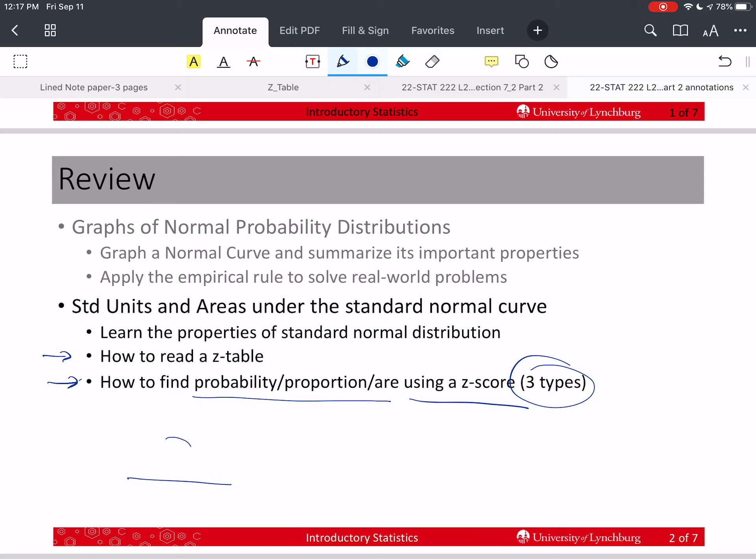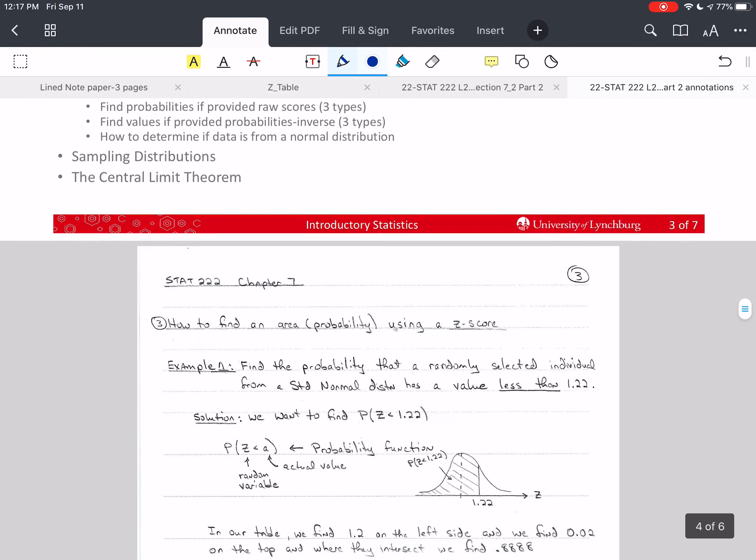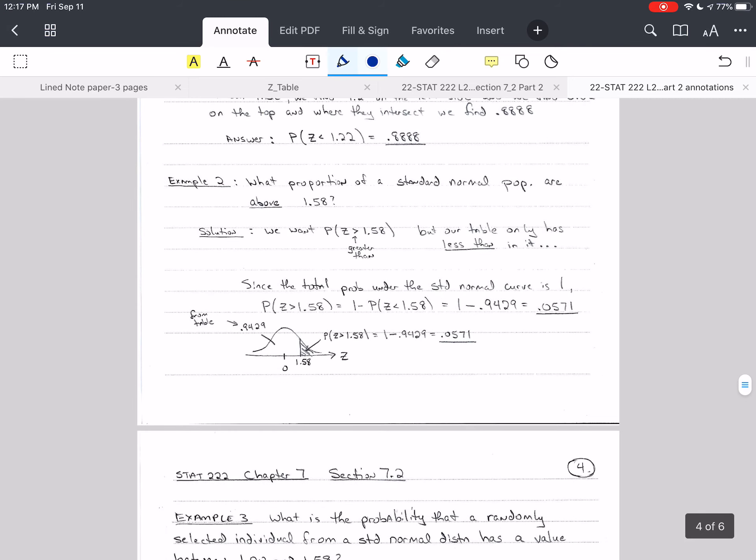which was where we're saying that there's some value, let's call it a, and we want to know what's the probability that z is less than a. We found that. That's easy to find in the table. So now today we're going to continue those three types and we're going to start with an example.